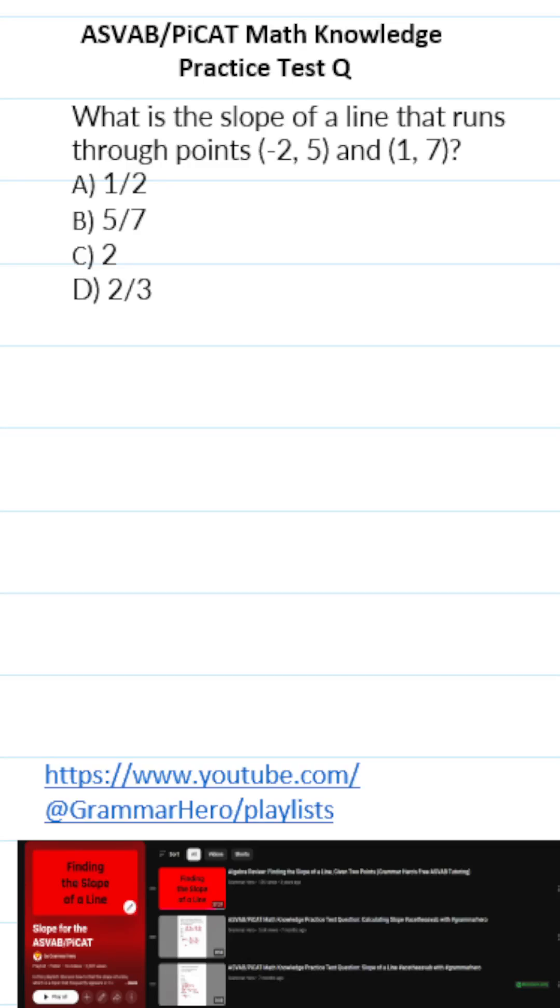This ASVAB PyCat Math Knowledge Practice Test question says, what is the slope of a line that runs through the points negative 2, 5, and 1, 7?